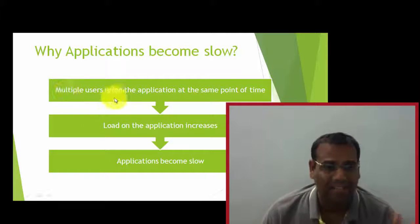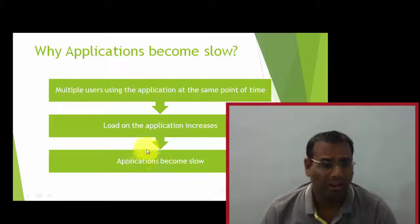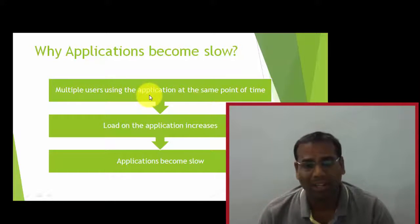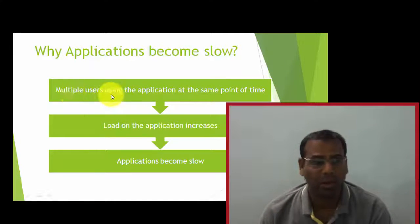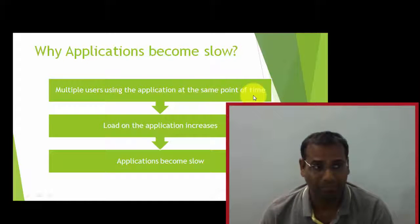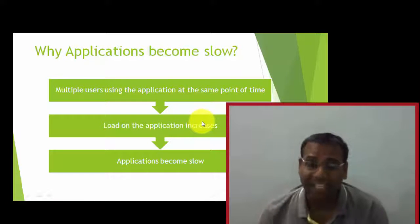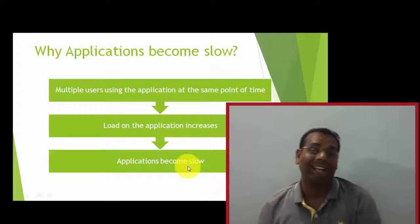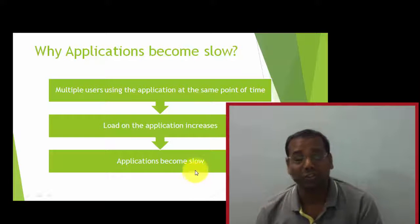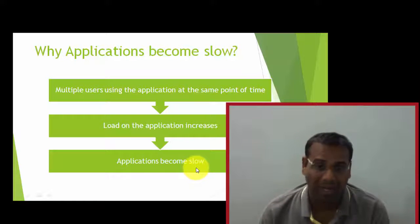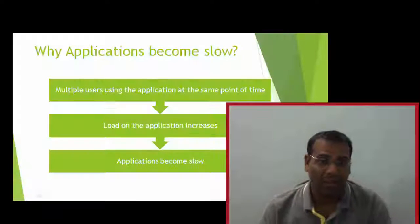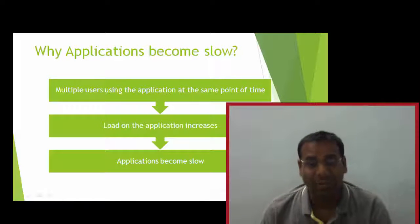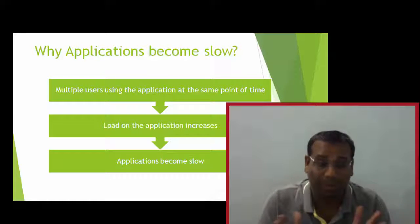To simply put it, if you follow these three lines you would understand why applications actually become slow: multiple users using the application at the same point of time — because of this, the load on the application increases and that actually makes the application slow. It's quite easy to understand, but I'll take an example to explain this.